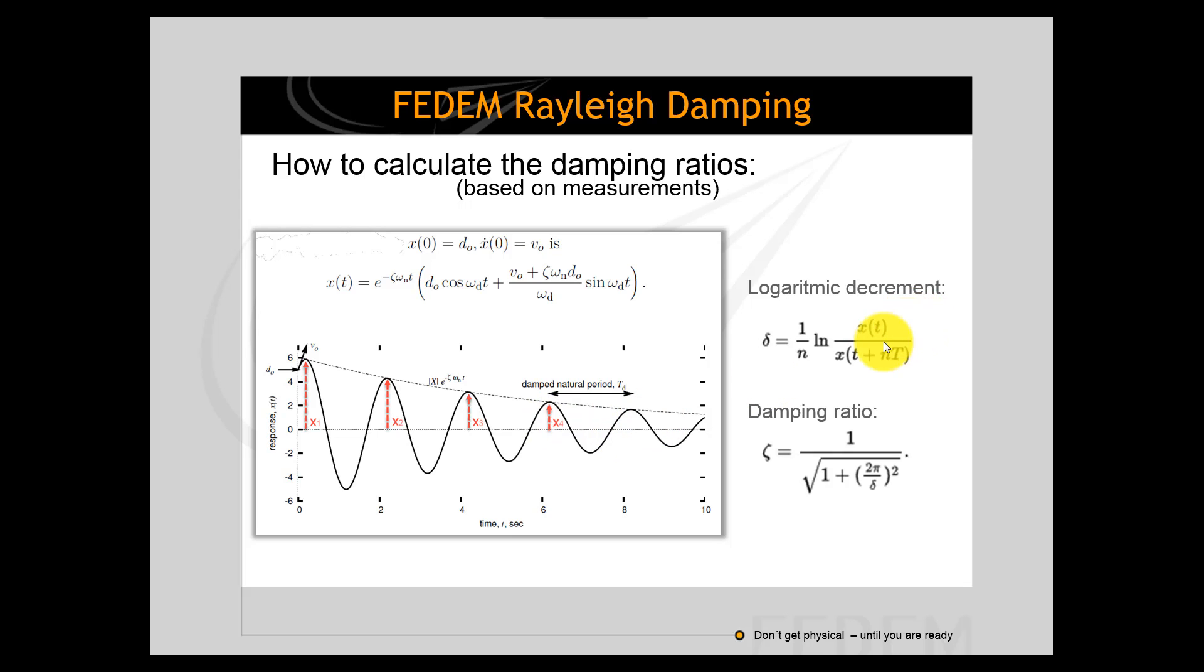And then you calculate the ratio between x1 and x4. This is x1 and this is x4. And then you calculate the logarithmic value of that term and you divide it by the number of cycles between the two measurements. So it's the logarithmic value divided by n equals 3. And then you find the logarithmic decrement of exactly this vibration mode and eigenfrequency.